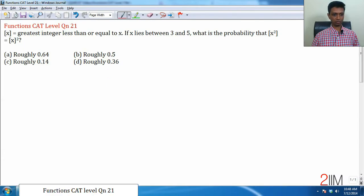Function CAT level question number 21. Box of x is the greatest integer less than or equal to x. If x lies between 3 and 5, what is the probability that greatest integer of x square is equal to greatest integer of x the whole square?